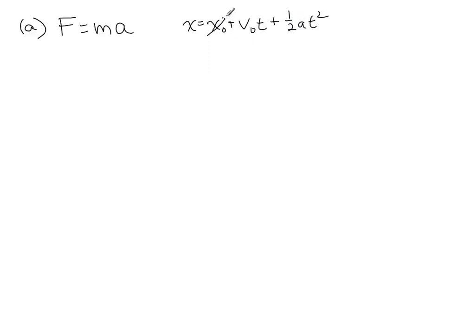I know that x-naught is zero because they didn't tell me something awkward about where it started. I know that v-naught is zero because it says it starts from rest. So that means that x equals 1 half at squared and a is equal to 2x over t squared.